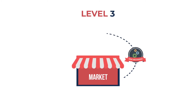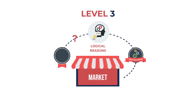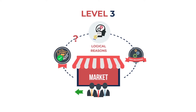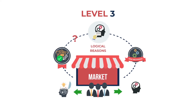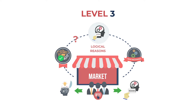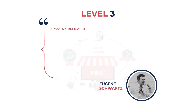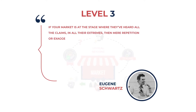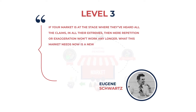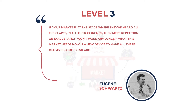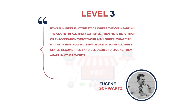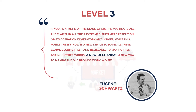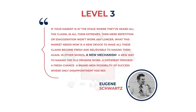At level three, you need to introduce a mechanism with a logical reason for why your claim is achievable. Your market is becoming more educated, and at this time you need to give them logic and reason for them to want to take action. As Eugene says: if your market is at the stage where they've heard all the claims in all of their extremes, then mere repetition or exaggeration won't work any longer. What this market needs now is a new device to make all these claims become fresh and believable — a new mechanism, a new way to make the old promise work, a different process, a fresh chance, a brand new possibility of success where only disappointment has resulted before.